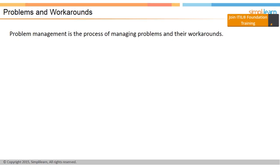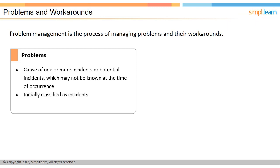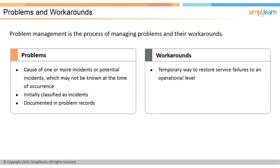The process of managing problems and coming up with workarounds for them is called problem management. In the context of ITIL, a problem is the cause of one or more incidents or potential incidents; the cause may not be known at the time of the incident's occurrence. Problems are initially classified as incidents and are documented in problem records.